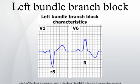Left bundle branch block is a cardiac conduction abnormality seen on the electrocardiogram. In this condition, activation of the left ventricle is delayed, which causes the left ventricle to contract later than the right ventricle.